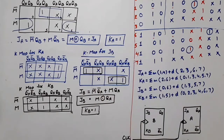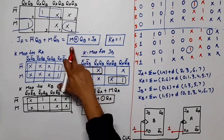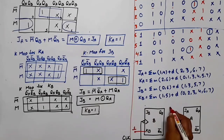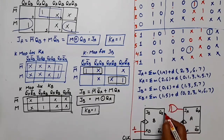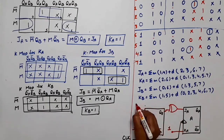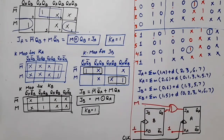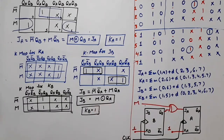KA is equal to 1, so we connect KA either with VCC or directly write 1. KB is equal to 1, same connection. For JA = M XOR QB, we use an XOR gate whose output connects to JA, with inputs QB and mode select M. For JB = M XNOR QA, we use an XNOR gate with first input M and second input QA.